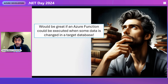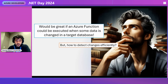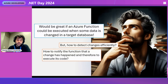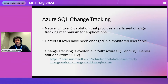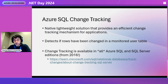So that would be our dream. The main issue is how we can detect changes efficiently in a database — because maybe you have a million or a billion rows. And even after detecting changes, how can you notify the function so it can actually be executed? That is exactly why we built Change Tracking in Azure SQL already from 2016. It's available in Azure SQL and all SQL Server editions from 2016.